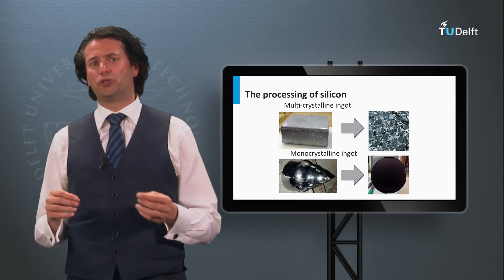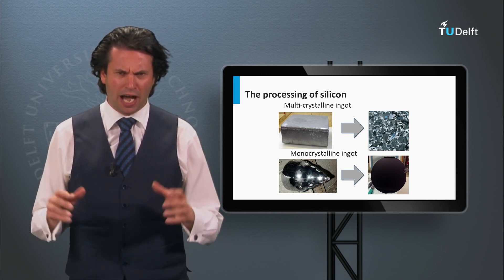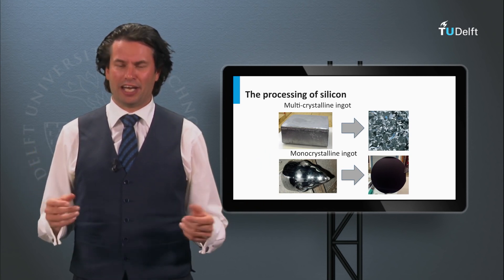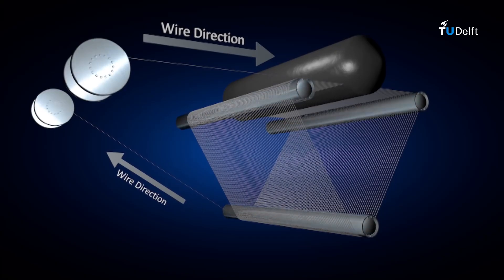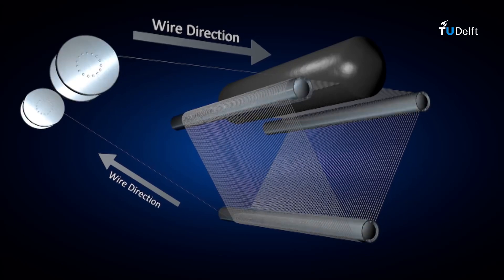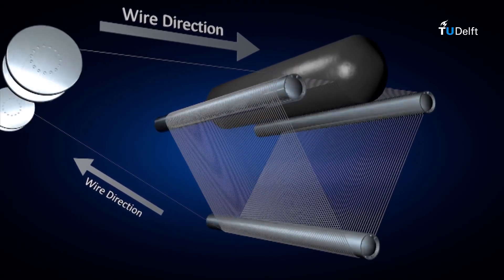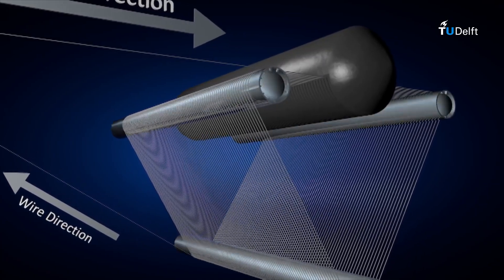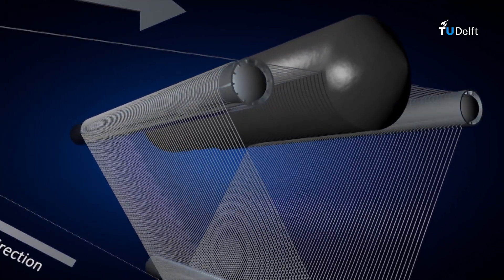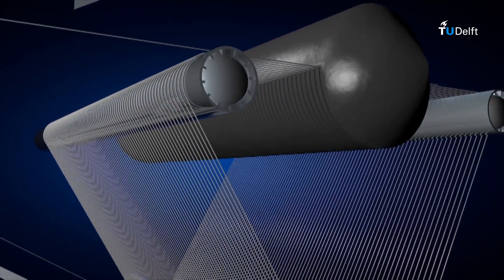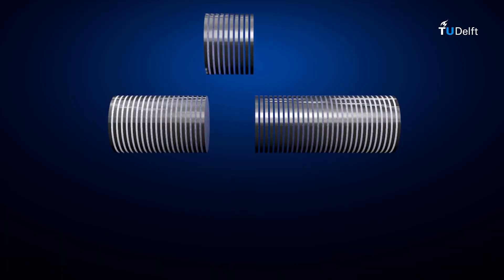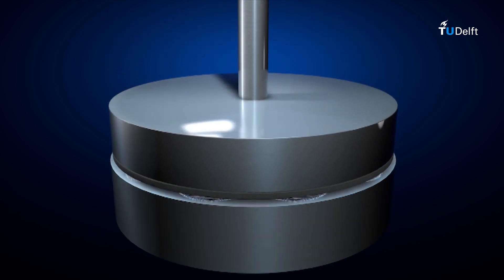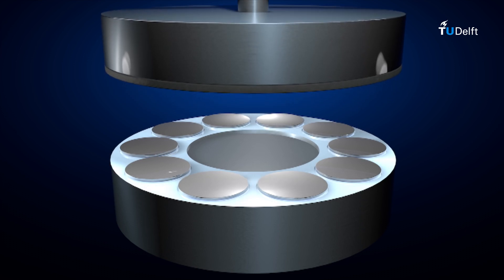Now that we know how to produce monocrystalline and multicrystalline ingots, wafers are made from them by sawing. A disadvantage of the sawing step is that we waste a significant fraction of silicon as kerf loss, which is usually determined by the thickness of the wire or saw used and is in the order of 100 microns. This is a large fraction considering that typical crystalline silicon wafers used in solar cells are 150 to 200 microns thick. Sawing damages the surface, so this step is followed by a polishing step.